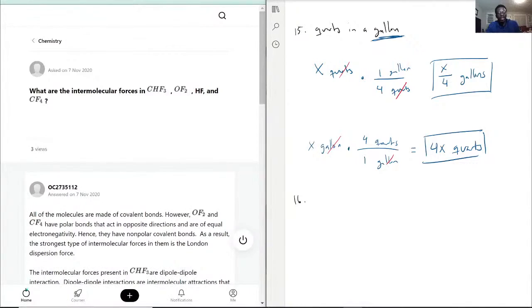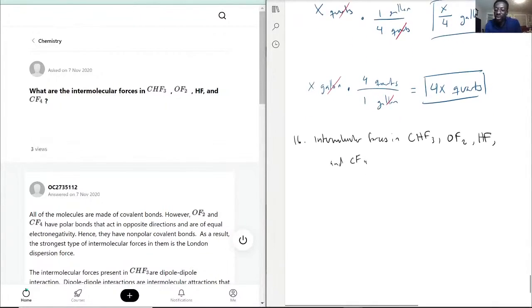What are the intermolecular forces in CHF3, OF2, HF, and CF4? Let's write them down in a linear pattern. I'm just going to rewrite it so we can space it out a little bit.